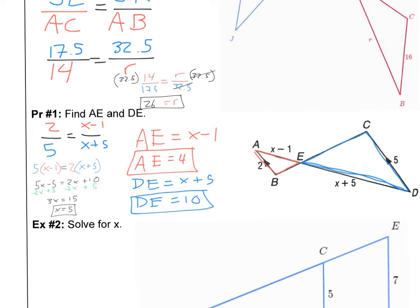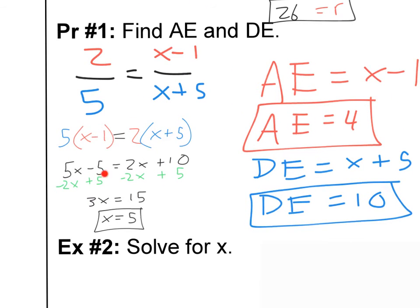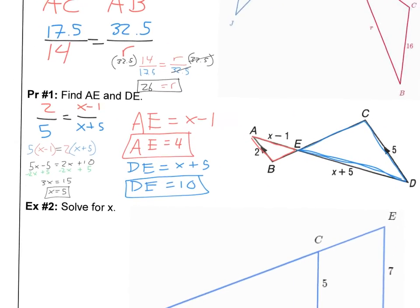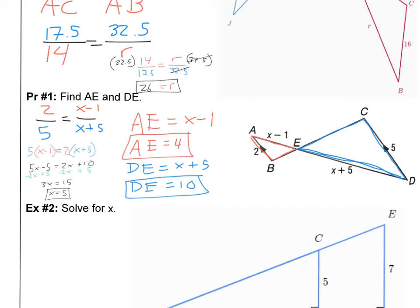The first thing I did was set up a proportion. I saw that 2 corresponds to 5, so I wrote 2 is to 5 as (X minus 1) is to (X plus 5). Since there are variables on both sides, I have to cross multiply. After distributing and using algebra, I get X equals 5. Plugging back in: 5 minus 1 is 4, and 5 plus 5 is 10. So AE equals 4 and DE equals 10.